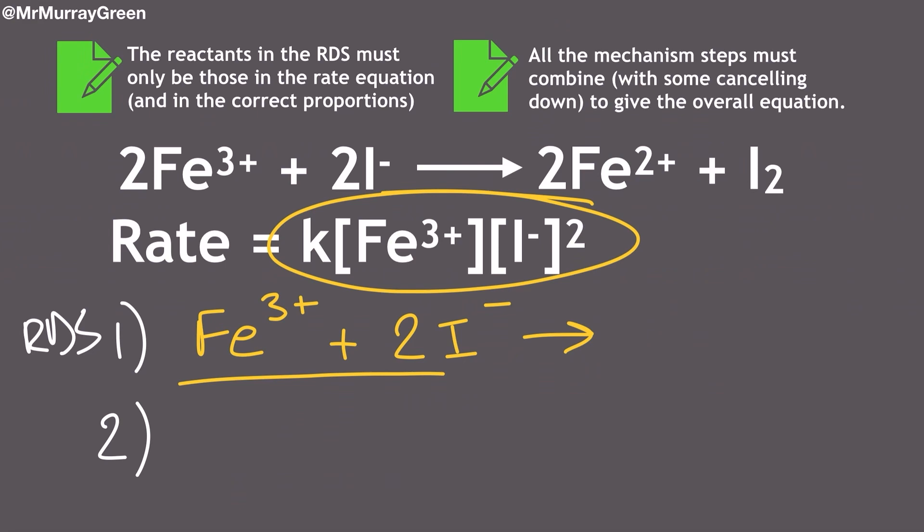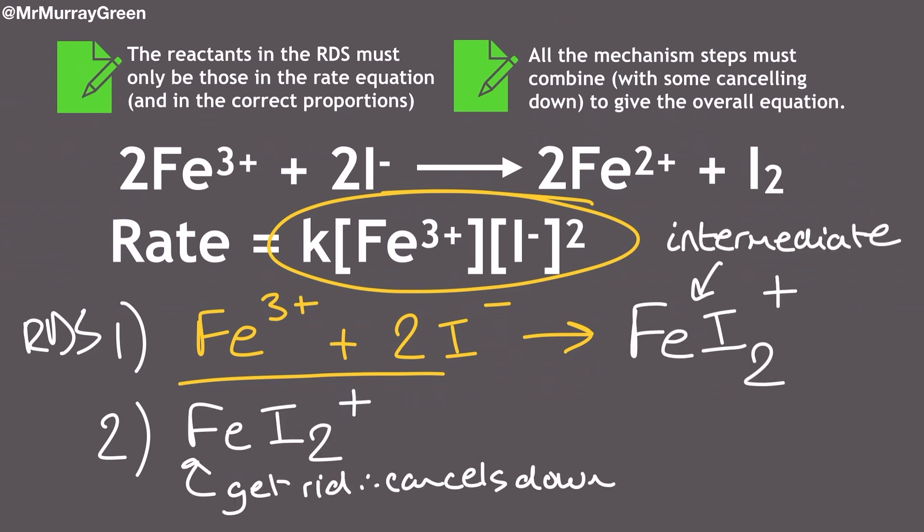So what about the products here? What do I make? This can be a little trickier, but most mark schemes will often accept something like this. It's an intermediate that isn't shown in the overall reaction equation, and it's basically just a combination of the iron-3 and the iodide ions I'm using as the reactants in this rate determining step. All the atoms and charge balance from one side of the equation to the other here, so it's a completely valid suggestion to have made in this process.